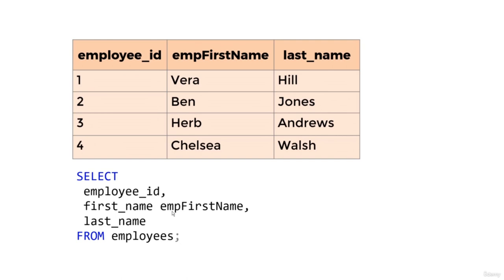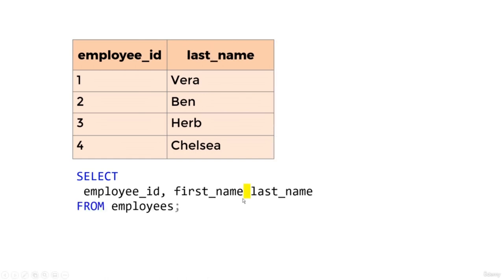Without the AS keyword, the code is less readable and it's more difficult to spot a bug involving a missing comma. For example, accidentally forgetting a comma between first_name and last_name — the query still works, but what happens is first_name gets renamed to last_name in the result. So these are the actual employees' first names, but we've accidentally renamed it to last_name. Using the AS keyword makes it much easier to spot this type of bug.